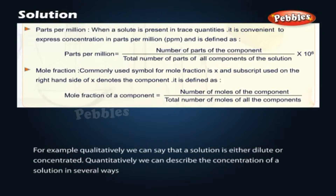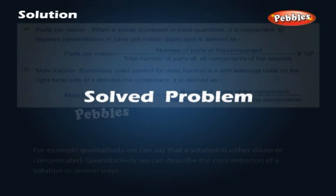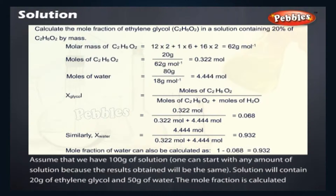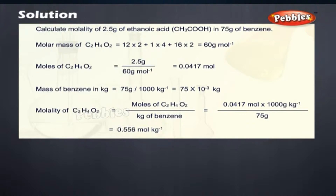Quantitatively, we can describe the concentration of a solution in several ways. Solved problem: Calculate the mole fraction of ethylene glycol in a solution containing 20% of C2H6O2 by mass. Assume that we have 100 grams of solution. The solution will contain 20 grams of ethylene glycol and 80 grams of water. The mole fraction is calculated. Also, calculate molality of 2.5 grams of ethanoic acid in 75 grams of benzene.